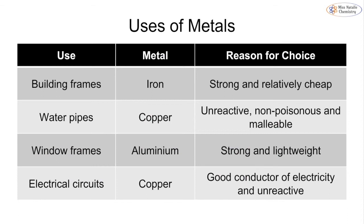For example, for a building frame we would most likely use iron, because iron is very strong and fairly cheap. For water pipes we tend to use copper, because copper is unreactive — so it won't react with the water and wear away — it is non-poisonous so it won't contaminate the water supply, and of course it is malleable. Water pipes have to bend around different parts of a building, so the fact that copper is malleable and can be shaped makes it ideal.